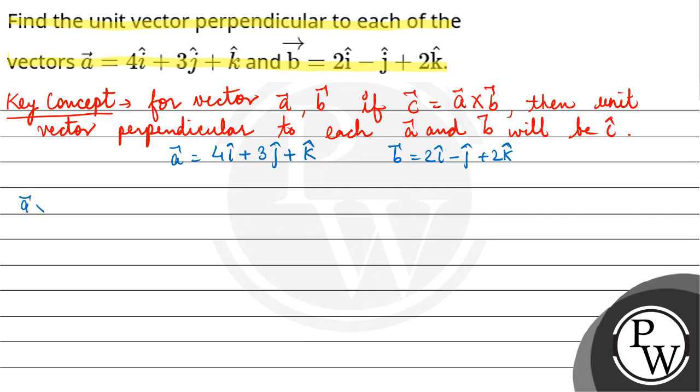So a cross b equals the determinant: i cap, j cap, k cap; 4, 3, 1; 2, -1, 2. Which equals i cap (3×2 - (-1)×1) minus j cap...